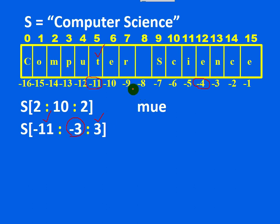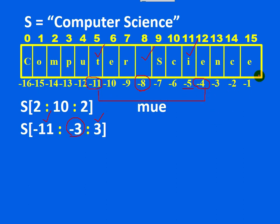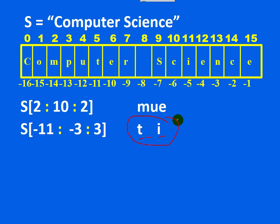The next character is at index minus 11 plus 3, which is minus 8. The next character is at minus 8 plus 3, which is minus 5. The next would be minus 5 plus 3, which is minus 2, but that is outside the range so it is not taken. The characters returned are T, space, and I — that is the substring returned by the slicing operator.